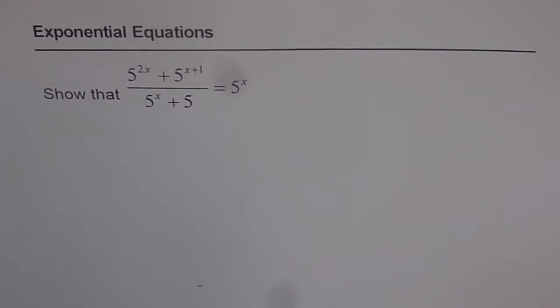Exponential equations: show that 5 to the power of 2x plus 5 to the power of x plus 1, divided by 5 to the power of x plus 5, is equal to 5 to the power of x. This is an identity.